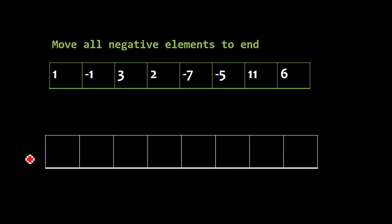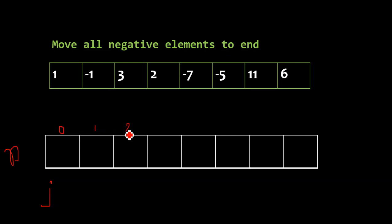What we will do is take a new array, and I will also take a variable j pointing at the start. By the way, this is the zeroth index, this is the first index, second index, third index, fourth index, fifth, sixth, and seventh. The same indexing applies to the new array as well.